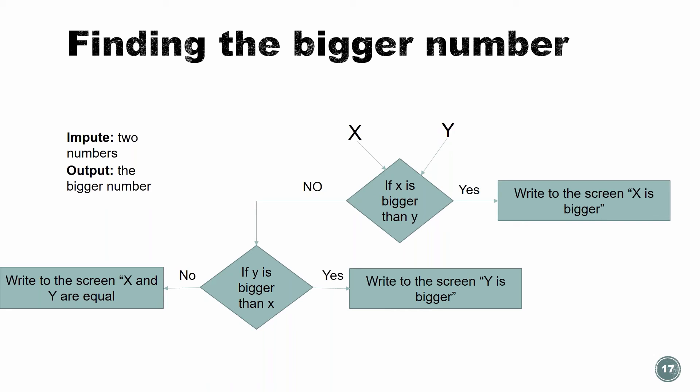If yes, just write out to the screen, the cout command, X is bigger. If X is not bigger, then you need to ask another question: is Y the bigger one? If yes, just write Y is the bigger. And if not, what does it mean? They are equal, right?